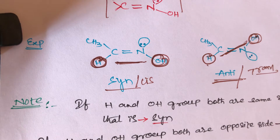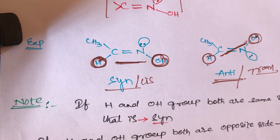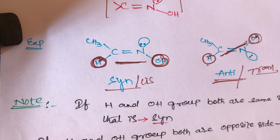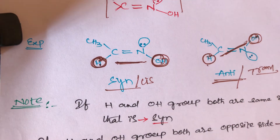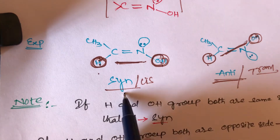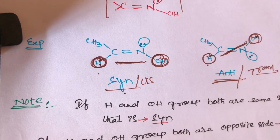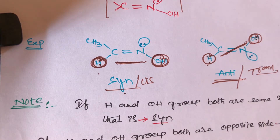Syn and anti are formed only in oximes. Syn-oxime is similar to cis and anti-oxime is similar to trans. Hydrogen and OH group on the same side is called syn or cis, and hydrogen and OH group on the opposite side is called anti-oxime.